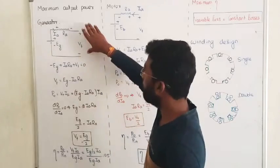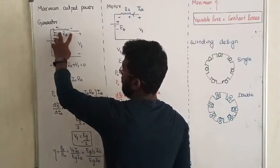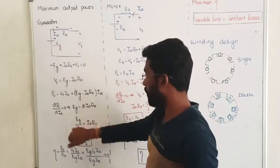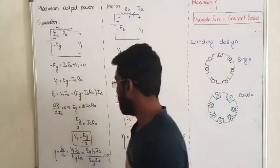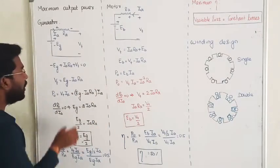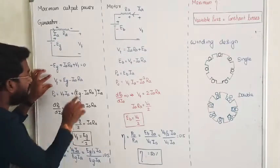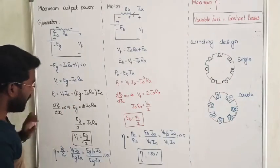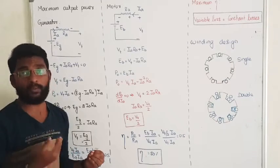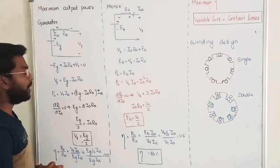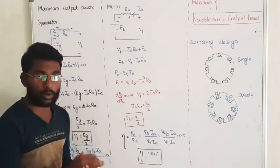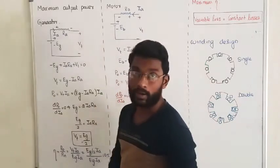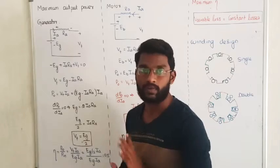So the conclusion is: if we are generating maximum output power, the voltage drop across the armature resistance Ia*Ra is 50% of the generator voltage, that is Eg by 2. Substituting this, the terminal voltage Vt equals Eg minus Eg/2, which gives Vt equals Eg/2. So under maximum power output condition, the terminal voltage is half the generated voltage. That is the point where we can receive maximum output at the terminal of the generator.